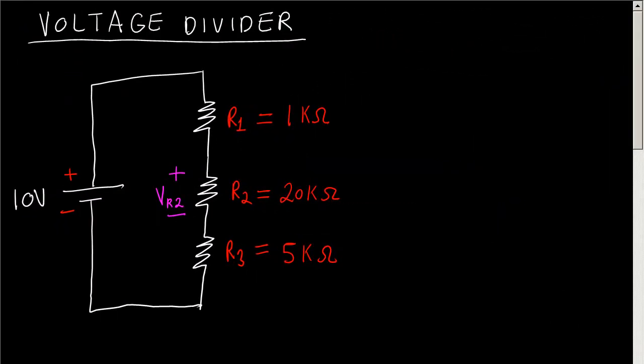So let's say you have the following circuit: three resistors in series, and you want to find the voltage at resistor 2 using the voltage divider formula. The formula says that the voltage at resistor R2 is going to be equal to the voltage source...